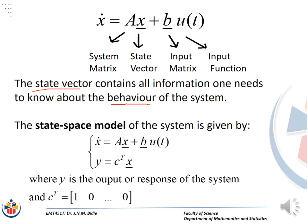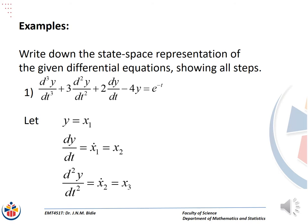Therefore, the state space model or the state space representation of the system can be given by x_dot equal to Ax plus Bu of t, and y equal to C transpose x. Note that y represents the output or the response of the system, and C transpose is represented by the row vector: 1, 0, all the way to the nth term being 0.